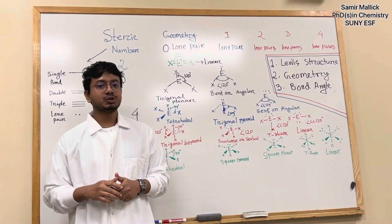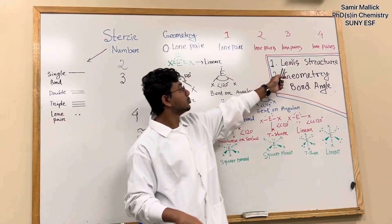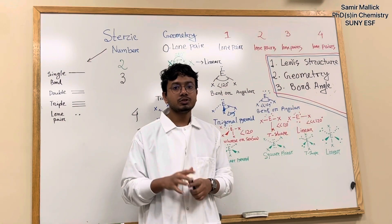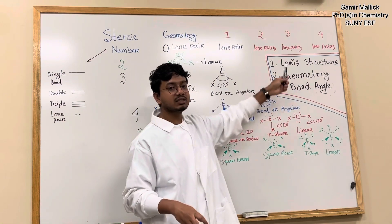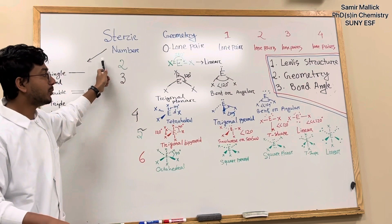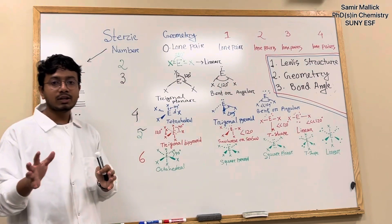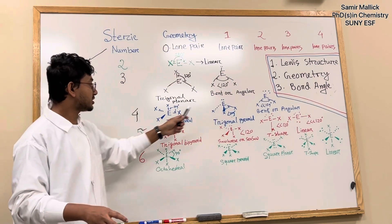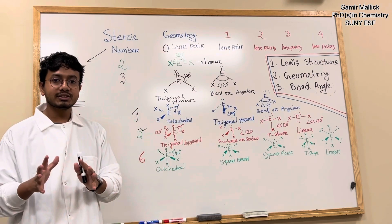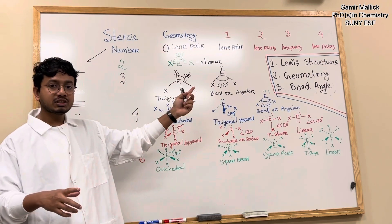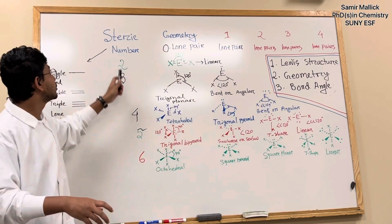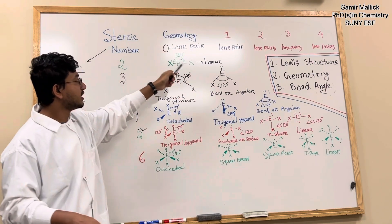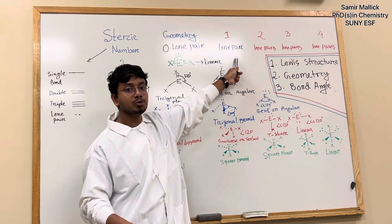Hello, in today's video I am going to show you the Lewis structure, geometry, and bond angle of a compound. First, to determine the Lewis structure you need to count the steric number. You can see the whiteboard where I draw a lot of structures. This is just a common concept, so before going to the Lewis structure you need to know the steric number, and then we will go to the geometry and the effect of the lone pair.